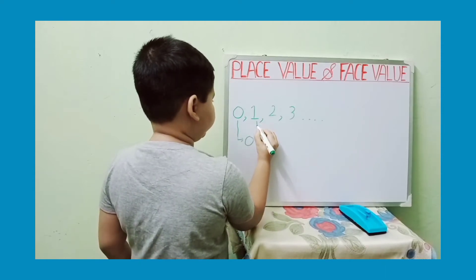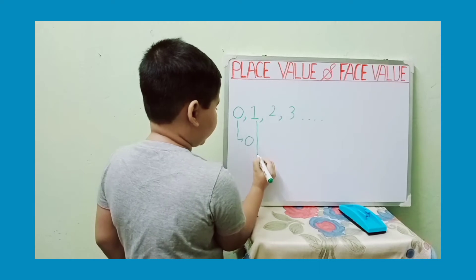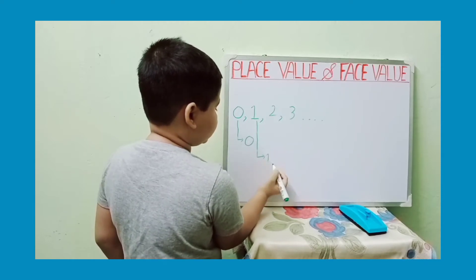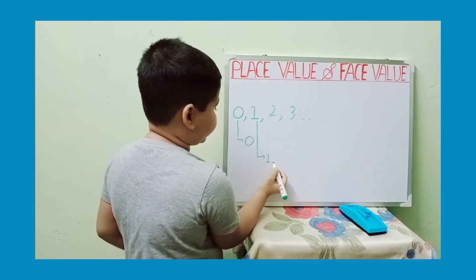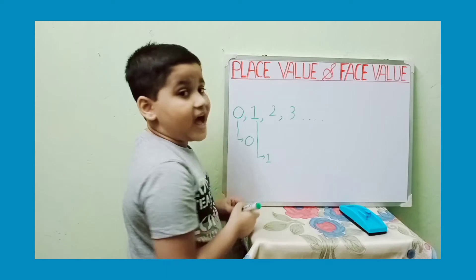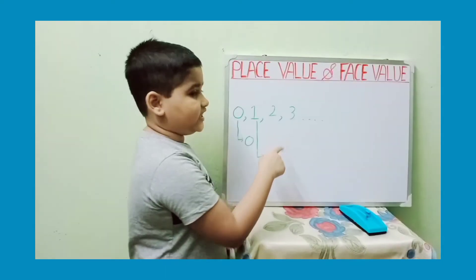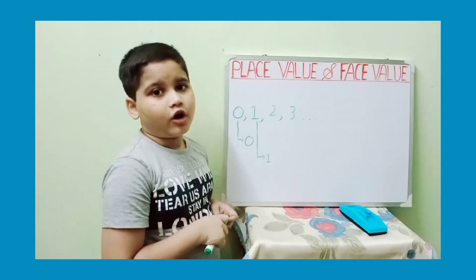The face value of one is always one. And same for two, three and so on.